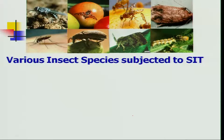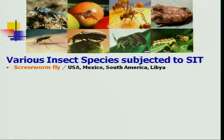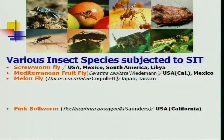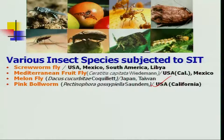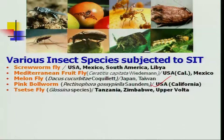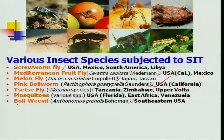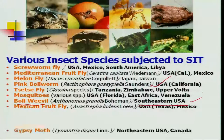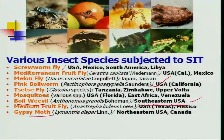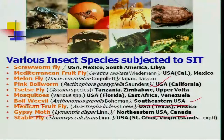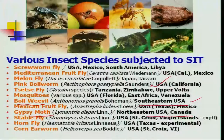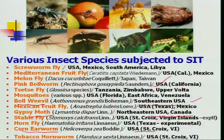Other success stories include the melon fly, pink bollworm — an important cotton pest in the USA — eradicated using SIT. The tsetse fly, mosquitoes in USA and African areas, and boll weevil — another important cotton pest — were eradicated from the southeastern USA. Gypsy moth, an important temperate tree pest from northern USA and Canada, has been eradicated. Stable fly, horn fly, corn earworm — a major corn pest in the USA — have shown successful results with SIT. Finally, the tobacco hornworm on tobacco in the USA was also successfully eradicated.